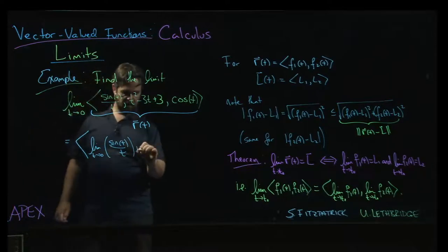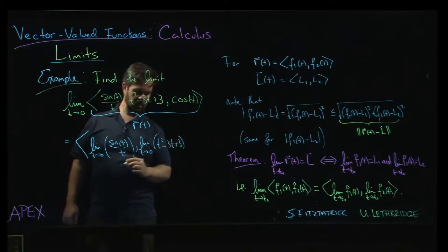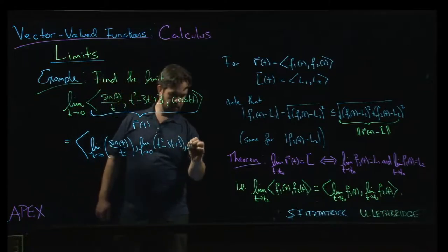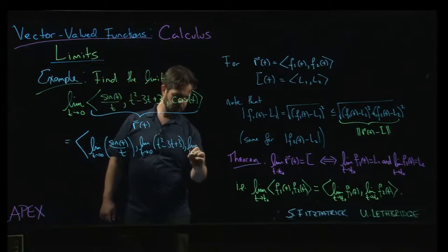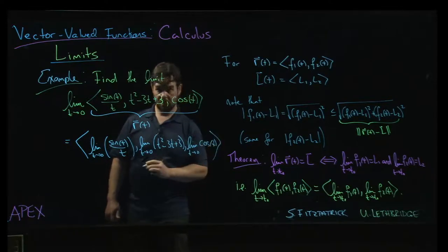Alright, then the limit t going to zero of t squared minus 3t plus 3, and then the limit t going to zero of cosine(t).